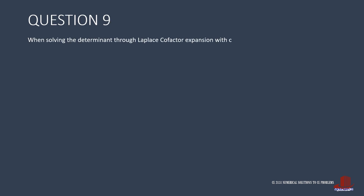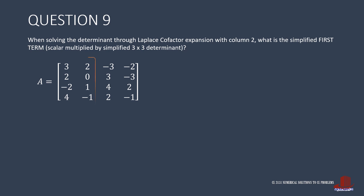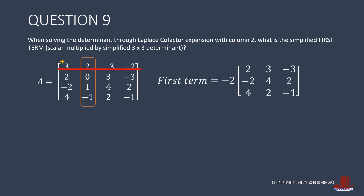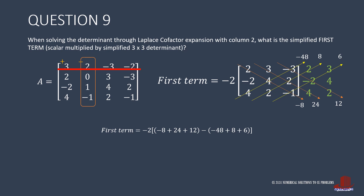Question 9 requires the simplified first term when working on Laplace expansion using column 2 of matrix A. After identifying column 2, we cover the first row, as this signifies the first term. So we have negative 2 times the matrix of remaining elements. Work on the determinant of the 3×3 matrix: the main diagonals give negative 8, 24, and 12; the secondary diagonals have negative 48, 8, and 6. So the first term is negative 2 times the quantity of negative 8 plus 24 plus 12, minus the group of secondary diagonals negative 48, 8, and 6. The first term simplifies to negative 124.